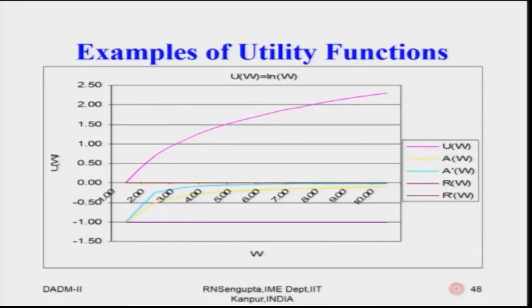For the logarithmic function, r prime was mentioned as 0 — and indeed the last column in the Excel sheet comes out to be 0. The values of a prime come out to be negative, which you can double-check in the spreadsheet. This corroborates that the actual calculation based on simple differentiation is verified when we take simple values of w, put them in the logarithmic utility function, and check the values of a, a prime, r, and r prime. The graph plots — pink for u, yellow for a, bluish-green for a prime, violet for r, brown for r prime — confirm the characteristics.